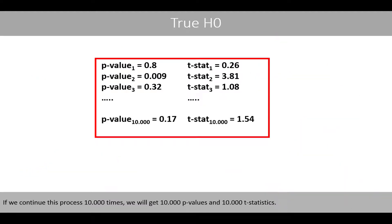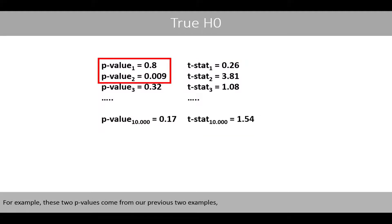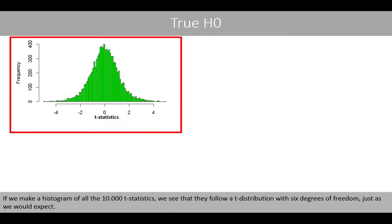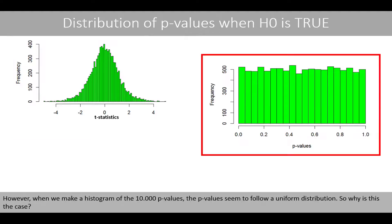If we continue this process 10,000 times, we will get 10,000 p-values and 10,000 t-statistics. For example, these two p-values come from our previous two examples, whereas this is the last p-value out of all 10,000 t-tests. If we make a histogram of all the 10,000 t-statistics, we see that they follow a t-distribution with 6 degrees of freedom, just as we would expect. However, when we make a histogram of the 10,000 p-values, the p-values seem to follow a uniform distribution.